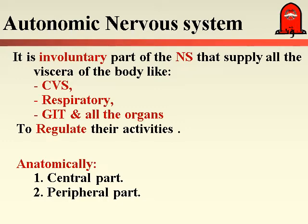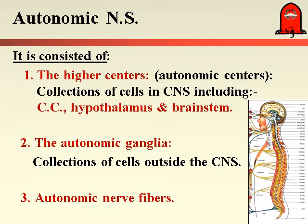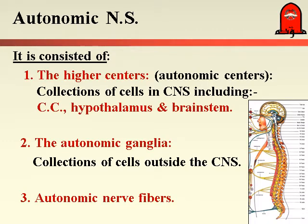Anatomically, the Autonomic Nervous System can be divided into central parts and peripheral parts. In more detail, it can be divided into higher centers, Autonomic Ganglia, and Autonomic Nerve Fibers. The higher centers are collections of nerve cells within the central nervous system — in the cerebral cortex, the hypothalamus, and the brainstem — representing centers for regulation of the Autonomic Nervous System and the different organs inside the body. The other part is the Autonomic Ganglia.